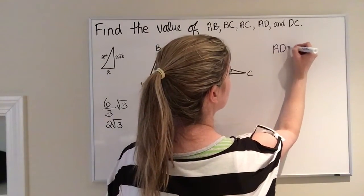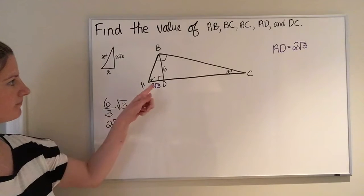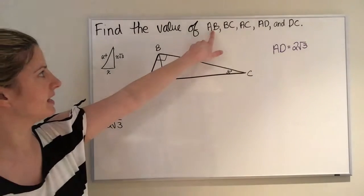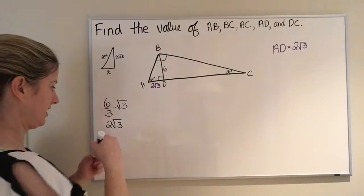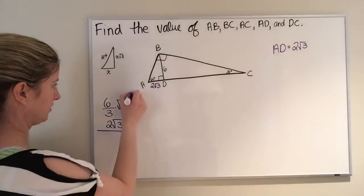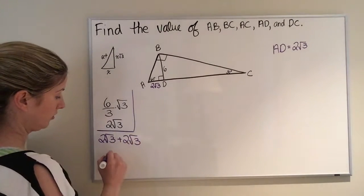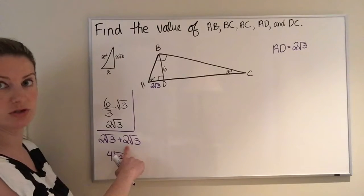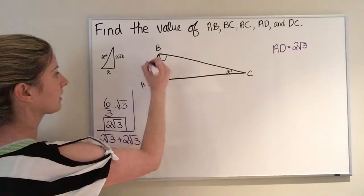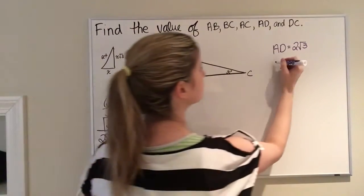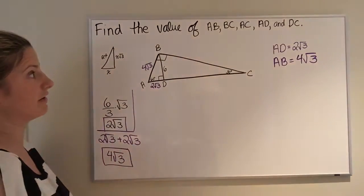Next we want the hypotenuse AB. To go from the short leg to the hypotenuse in a 30-60-90, you just double it. So AD was 2√3, and doubling gives us 2√3 times 2, which is 4√3. So AB equals 4√3.